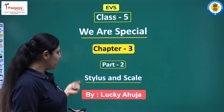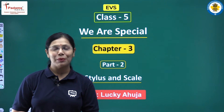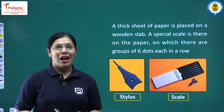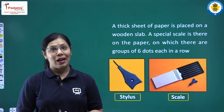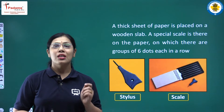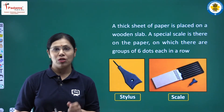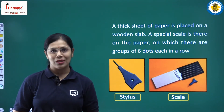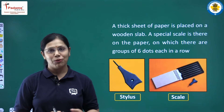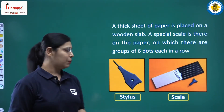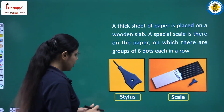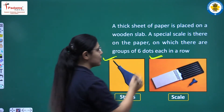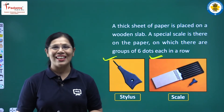Today's part is named 'Stylus and Scale.' So let's start learning about stylus and scale. Braille is a special kind of script in which six embossed dots are used for learning and reading purposes for blind people. Here we are talking about a few things related to Braille script. In these two pictures you can see — this is called a stylus and this one is called a scale.